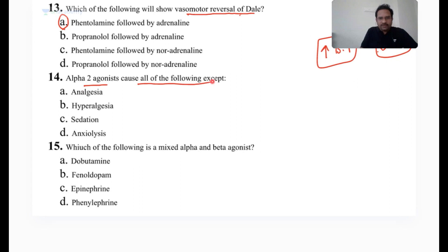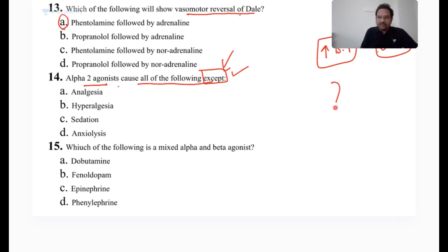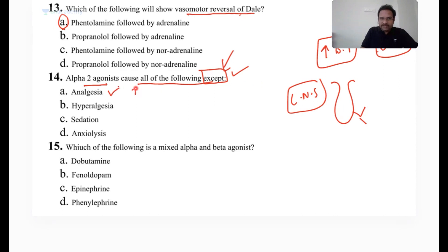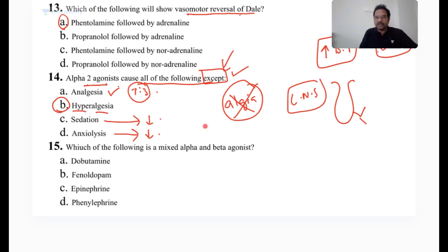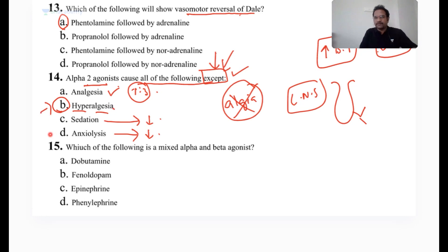Alpha-2 agonist causes all of the following except. Many competitive tests include 'except' questions and students often miss this word under stress. Alpha-2 agonists are presynaptic receptors present in the CNS with multiple effects: analgesia — for example, tizanidine causes analgesia by acting at alpha-2 receptors — as well as sedation and anxiolysis. All three are alpha-2 agonist responses. What is not? Hyperalgesia. Algia means pain; analgesia means lack of pain; hyperalgesia means excess pain. Alpha-2 agonists do not cause hyperalgesia — so option B is the right answer.